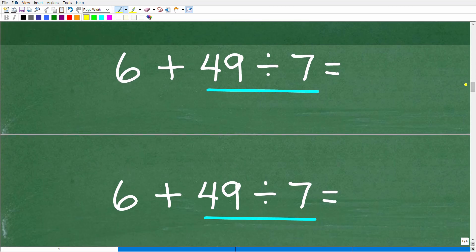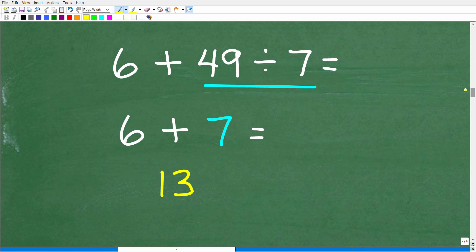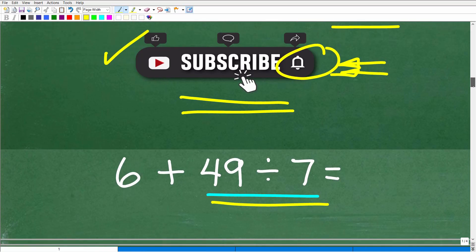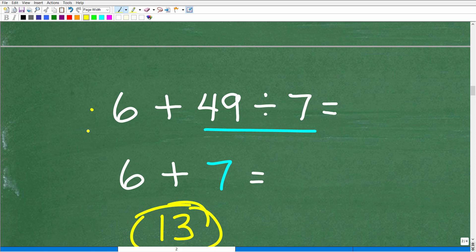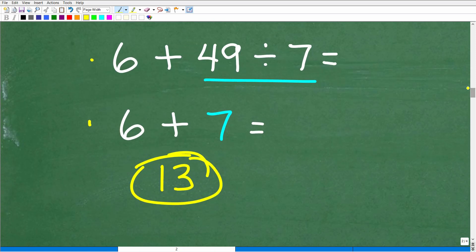All right. So 6 plus 49 divided by 7. I mean, pretty simple stuff at this point. 49 divided by 7, which, of course, is going to be 7. So we're down to 6 plus 7 is 13. Now, some of you might be saying, well, boy, you know, I write out every single step. Do I have to write out each step just like this? It seems kind of painful or drawn out, right? The short answer is yes. Okay. So, yes, you do.